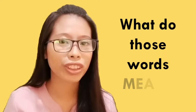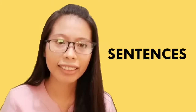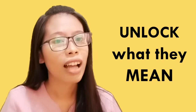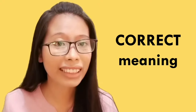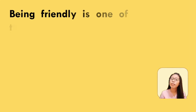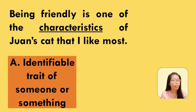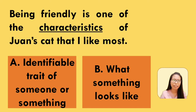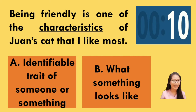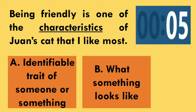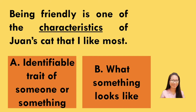So what do those words mean? We will use those words in sentences and you will unlock what they mean. I will give you 10 seconds to guess the correct meaning of the underlined word. Being friendly is one of the characteristics of one's cat that I like most. The meaning of characteristics — is it an identifiable trait of someone or something, or what something looks like? That's right, your answer is correct. The answer is letter A — it is an identifiable trait of someone or something.